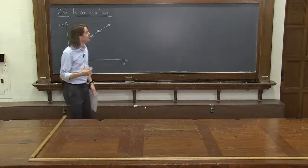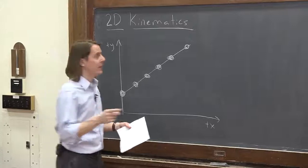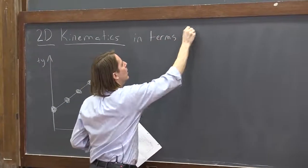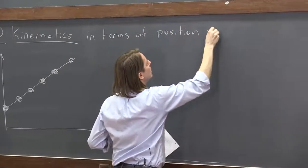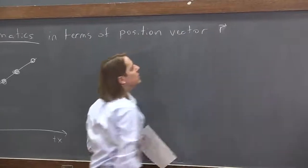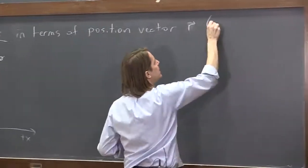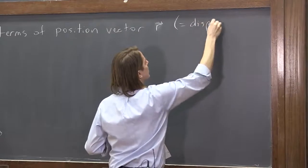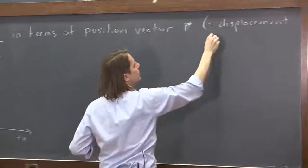Let's look at a more mathematically sophisticated way to do 2D kinematics. We're going to do it in terms of the position vector r, which equals the displacement from the origin.